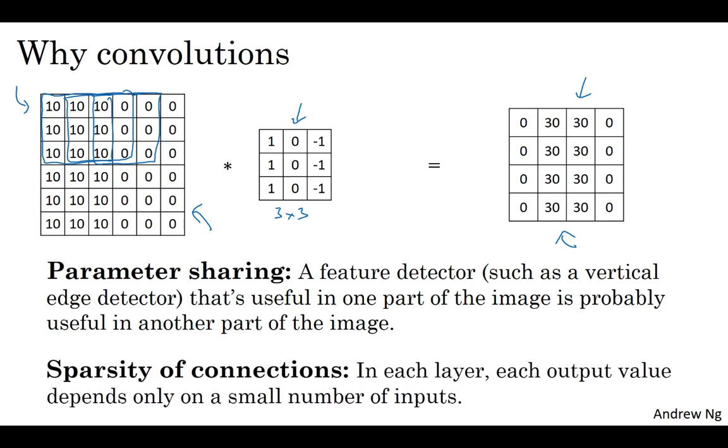The second way that confinets get away with having relatively few parameters is by having sparse connections. So here's what I mean. If you look at this zero, this is computed via three by three convolution, and so it depends only on this three by three input grid of cells.